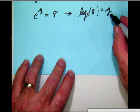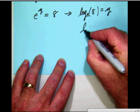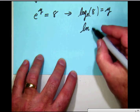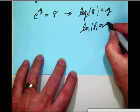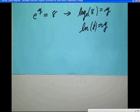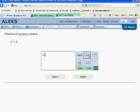But then we realize here that logarithm to the base e is just given the shorthand notation ln. Which stands for natural logarithm. The natural logarithm of 8 equals y. So let's go back over here to Alex and put that in. So we will put the natural logarithm of 8 is equal to y.